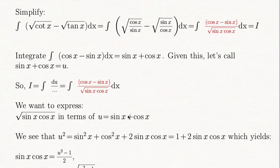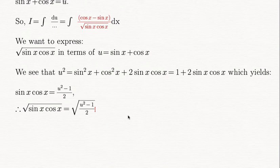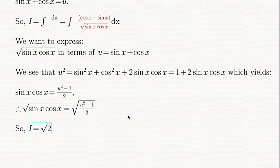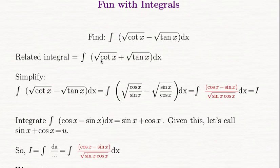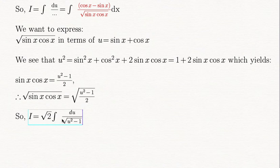Now we have successfully expressed the denominator in terms of u, so let's compile everything and put I back together. The 2 in the denominator of √((u²-1)/2) comes up to the numerator, giving a factor of √2. So I = √2 · integral of du / √(u² - 1). Note that when the original problem was √(cot x) + √(tan x), the denominator was √(1 - u²) instead of √(u² - 1).